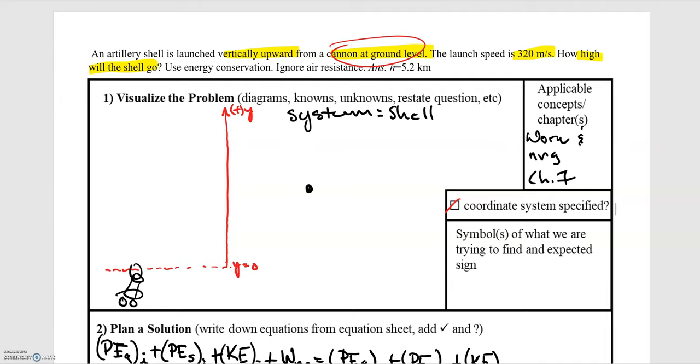After we define our coordinate system, now we can draw our diagram. So we have a cannon here. The cannonball is at y equals zero, and it's being shot vertically upward. So we have v-naught equal to 320 meters per second.